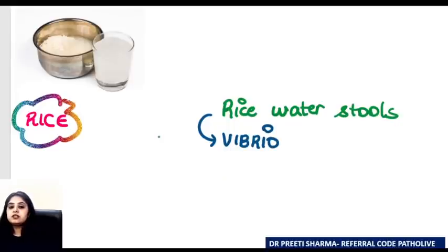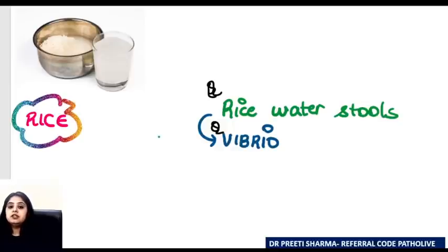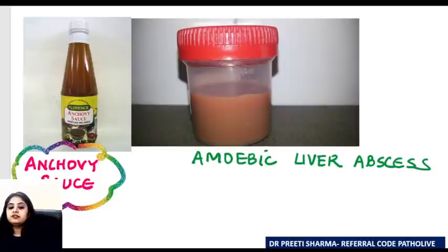Rice soaked in water — this is quite easy in microbiology. Rice water stools are seen with Vibrio cholerae; the diarrhea associated with Vibrio cholerae produces stools that look like the water after rice has been drained out.